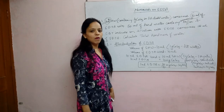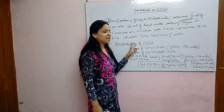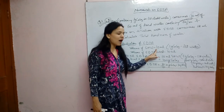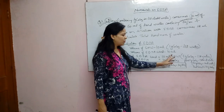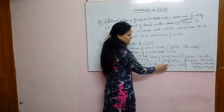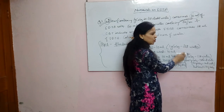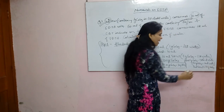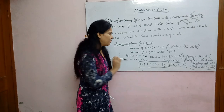Step 1, standardization of EDTA, must be done every time using standard hard water. First, write the volume of standard hard water given. Then write the volume of EDTA used for it. Form the statement, then use the preparation details of standard hard water (e.g., 1 g CaCO3 = 1 ml water) to arrive at how much mg CaCO3 is contained in 1 ml standard hard water. This gives us the value: 1 ml EDTA = 1 mg CaCO3.